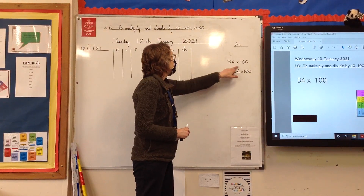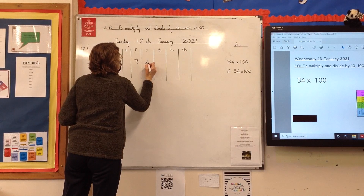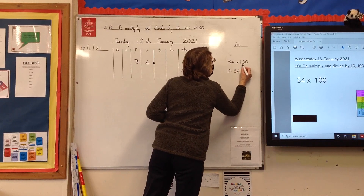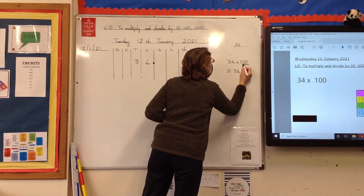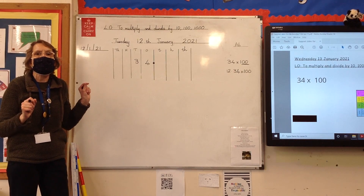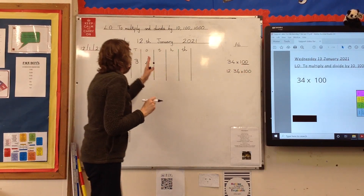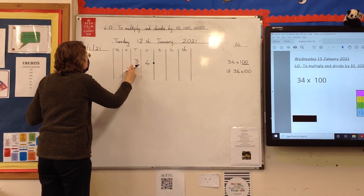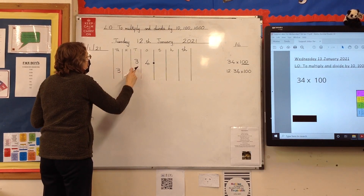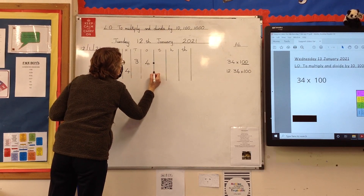We're going to start with 34 times 100. We've got three tens and four ones, and we're going to multiply it by 100. If you look at 100, there's a big clue as to how many places you need to move those digits — there are two zeros, which tells us we need to move them two places. The three tens will move two places into the thousands column, and the four ones will move two places into the hundreds column. The decimal point always stays where it is — it never moves.